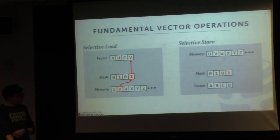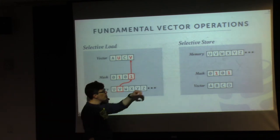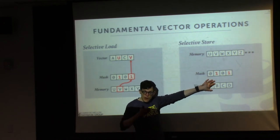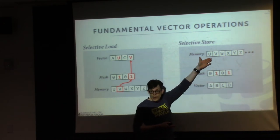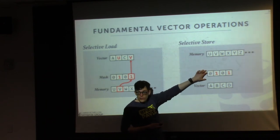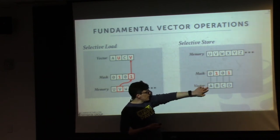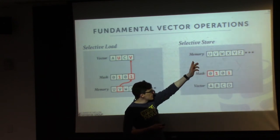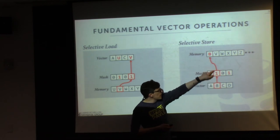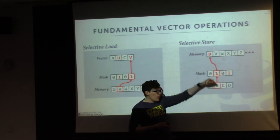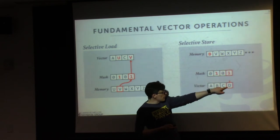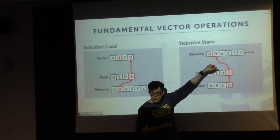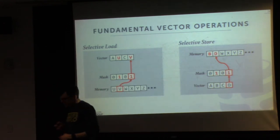Selective store does the reverse: we have contents in our SIMD register and want to write them out to memory based on a mask. If the mask value is zero, we skip that lane. If it's one, the first lane gets written to the first memory position, zero lanes are skipped, and the last lane with a one gets written to the second memory position.